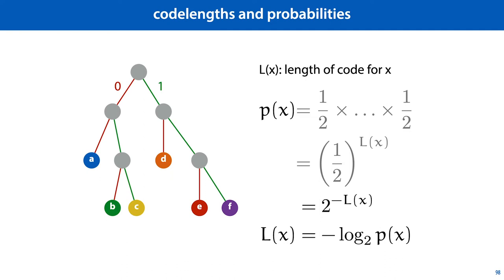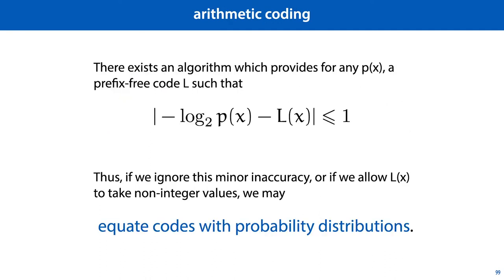So now we can ask exactly which probability distributions are captured by these prefix trees. And there's a result that tells us that there exists an algorithm which, given a probability distribution, provides a prefix-free code L, such that the difference between this negative logarithm of px and the code length provided by the code is never more than 1. And since we are usually talking about outcomes that would take many kilobytes or even megabytes to describe, a minor discrepancy of 1 bit is not a big deal, and we can hand wave this away.